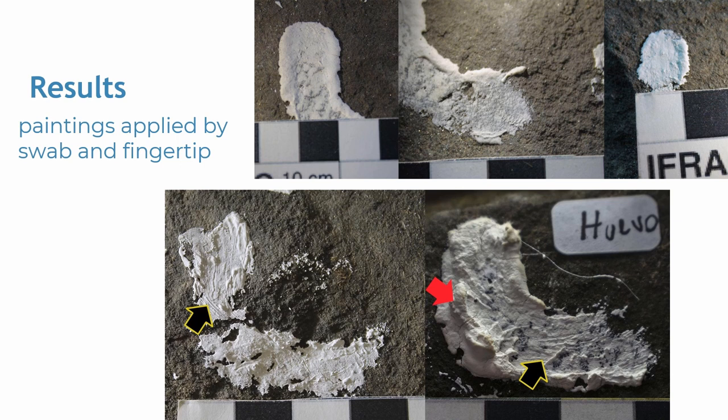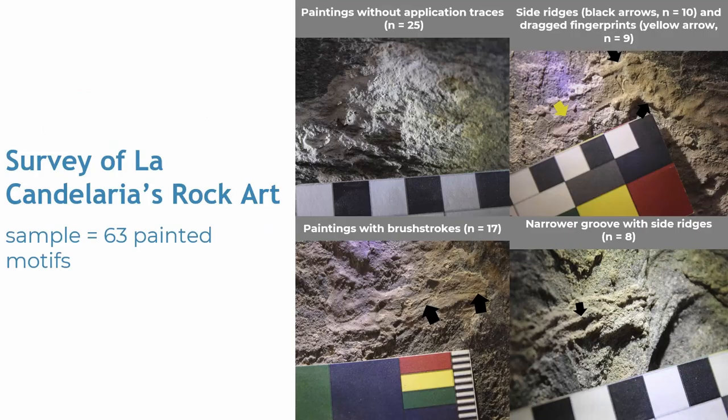To sum up, this experiment allowed us to distinguish application traces by the four tested techniques. According to our results, these marks are independent of viscosity or binders. With those results in mind, we headed to the cave of La Candelaria and carried out a macroscopic survey of a sample of 63 rock paintings. We observed the paintings with raking light and magnifying lenses to detect traces that could have been produced where the paint had been applied. The results indicate that in 25 motifs we could not detect application traces, 70 motifs had brush strokes, in 10 paintings side reaches were documented, and in 9 appeared drag fingerprints.